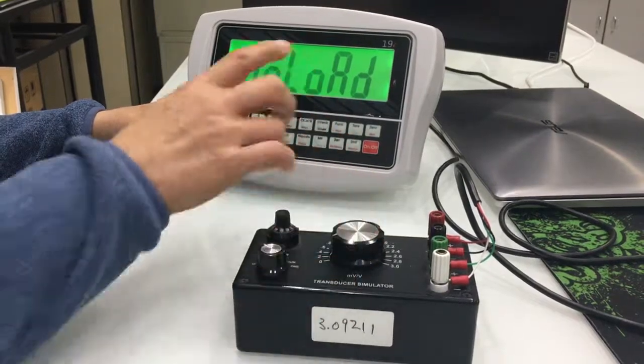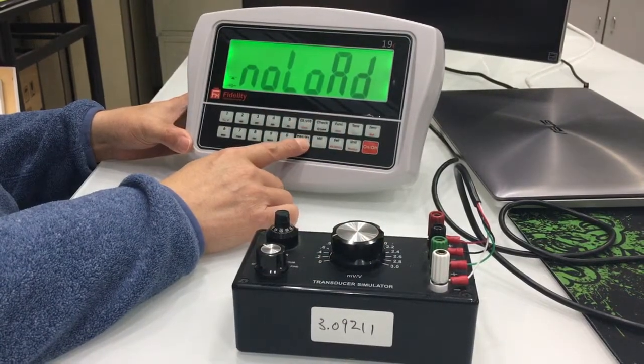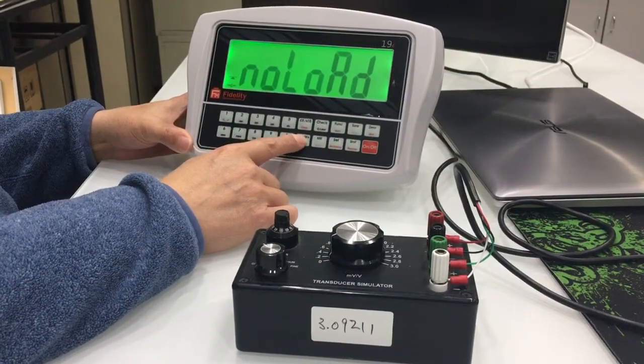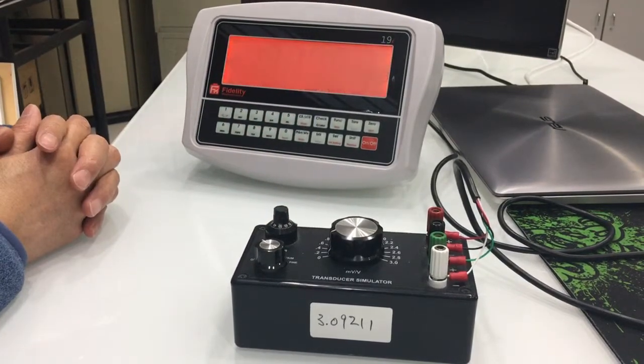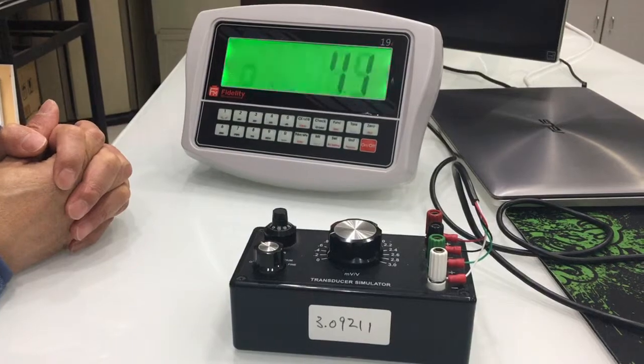Then the indicator is now ready for zero calibration. I'll remove all the load from the load cell and then press enter. The numeric calibration procedure is now completed.